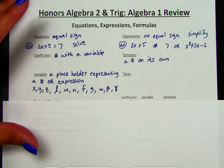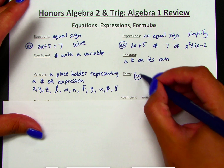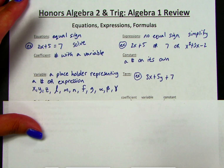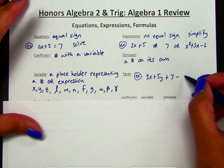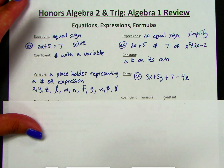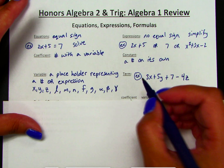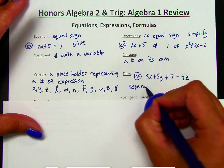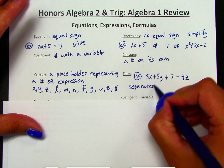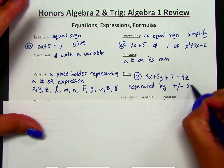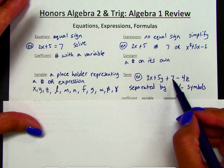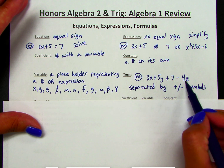Within our expressions, we also have a term. For example, if I had 3x plus 5y plus 7 minus 4z, a term is going to be separated by a plus or minus symbol. So 3x is a term, 5y is a term, 7 is a term, and negative 4z is a term.